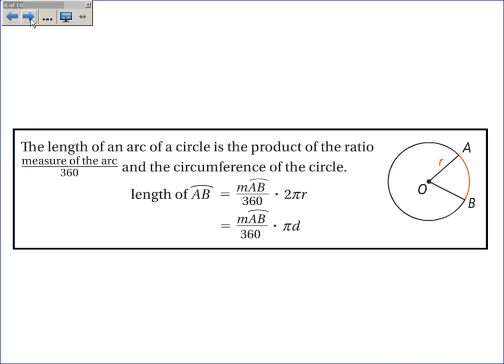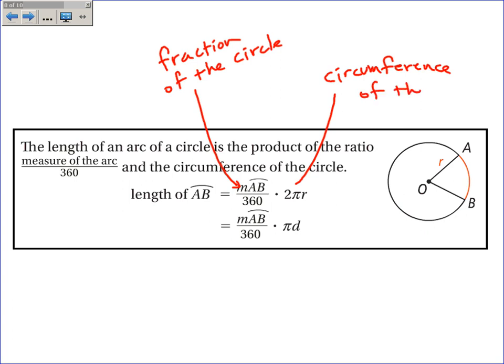Now, that kind of leads us into a formula. The length of an arc of a circle is the product of the ratio or the fraction of the circle and the circumference of the circle. So, this part right here, this fraction, gives you the fraction of the circle. And this is the circumference of the circle.